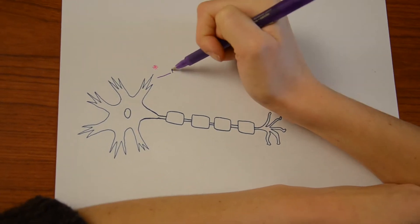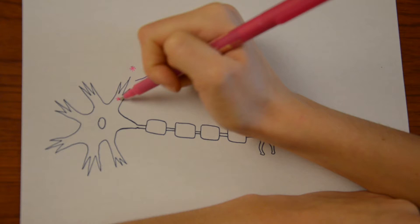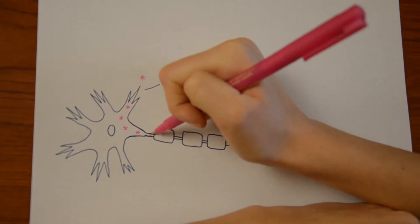Within our brain, we have specialized cells for the reception, conduction, and transmission of electrochemical signals: neurons.